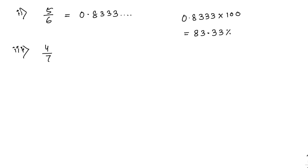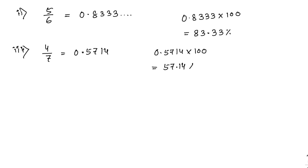The last one, number 3: 4 by 7. That equals 0.5714 up to four decimal places. Multiply by 100: 0.5714 into 100 equals 57.14 percent as your answer.